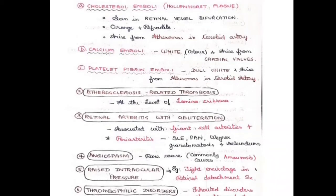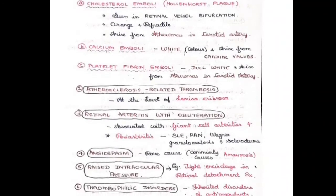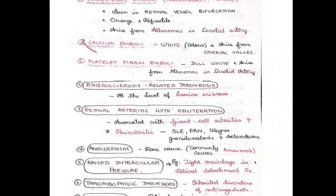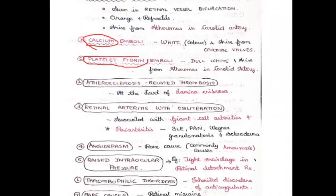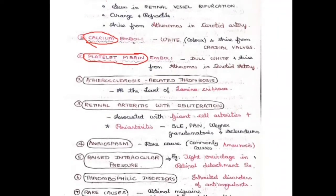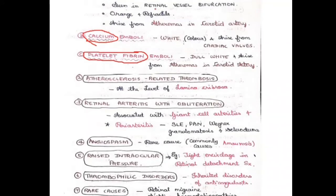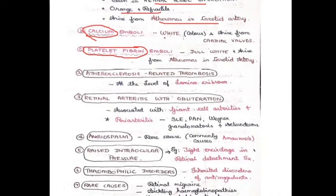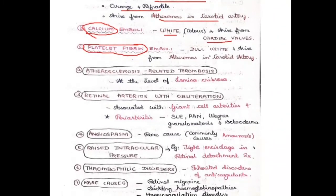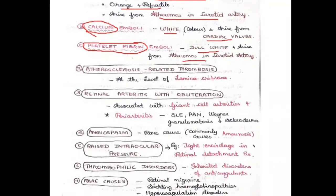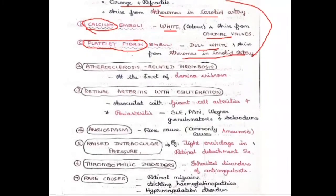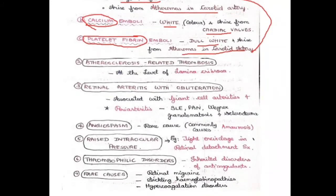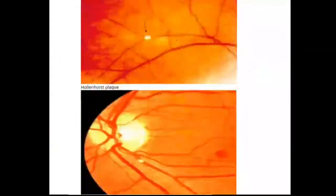Retinal artery occlusion is common in patients with hypertension and cardiovascular disease. The main causes include emboli — cholesterol emboli, calcium emboli, and platelet-fibrin emboli. Cholesterol emboli are orange and refractile, seen at vessel bifurcations, arising from carotid artery atheromas. Calcium emboli are white, arising from cardiac walls. Platelet-fibrin emboli are dull white, also from carotid atheromas.